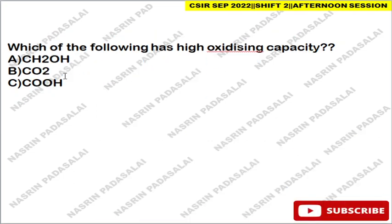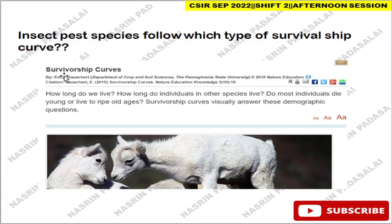Next: which of the following has high oxidizing capacity? The correct answer is carbon dioxide. CO₂ is the most oxidized form of carbon because all four bonds on the carbon are to oxygen atoms — that's why carbon dioxide is always in a highly oxidized state.